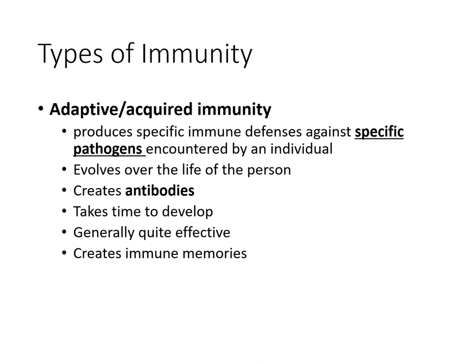If innate immunity is inadequate against a serious infection, you need to bring out the big guns — the other branch: adaptive immunity, sometimes called acquired immunity. In this type of immunity, you are able to create a specific immune response against a specific type of pathogen. The adaptive immunity is a tailored response specifically designed to fight a specific type of infection.